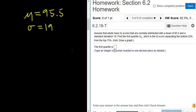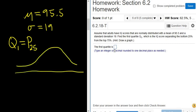Find the first quartile, Q1, which is the IQ score separating the bottom 25% from the top 75%. So Q1 is the 25th percentile, P25. So that means 25% is to the left. So here's Q1, so that means that this here is 25%. So this area here is 0.25.